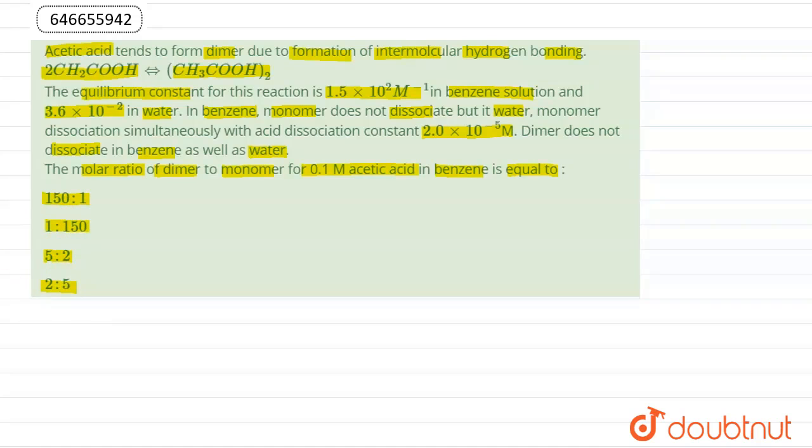In the question we are given that acetic acid is dimerizing in benzene as well as in water. For this reaction, 2 CH3COOH molecules are associating together to give this dimer (CH3COOH)2. This is dimer of acid.